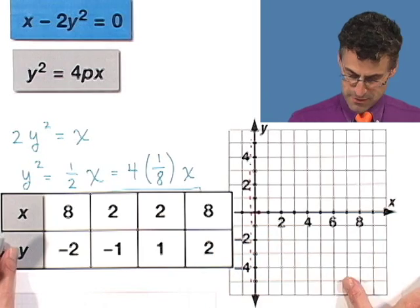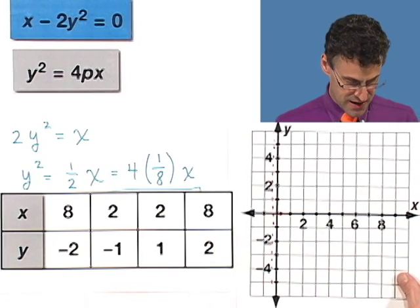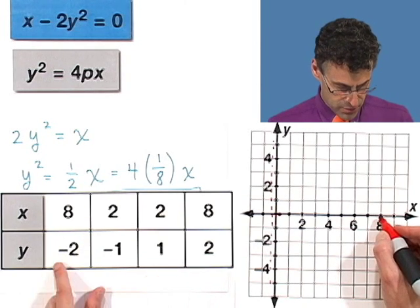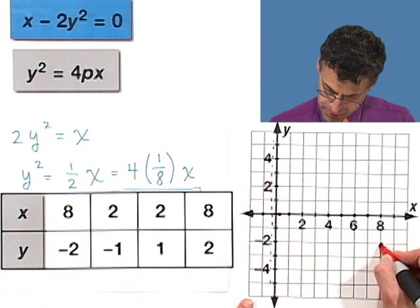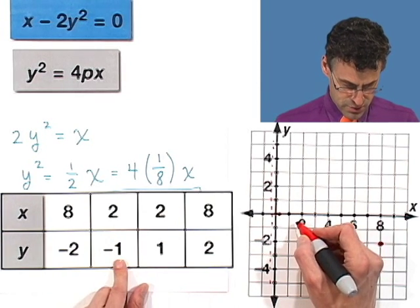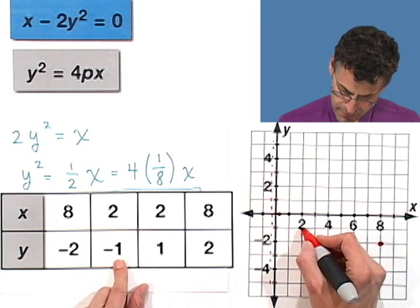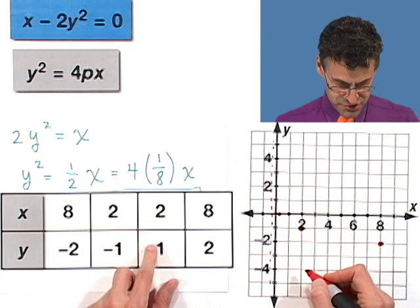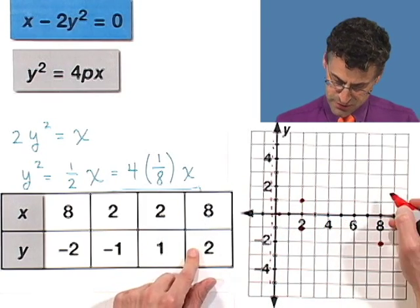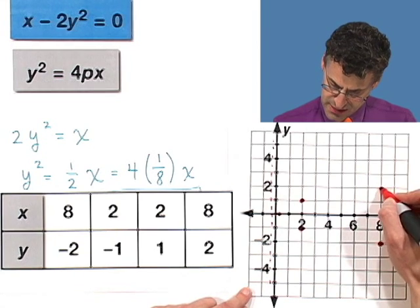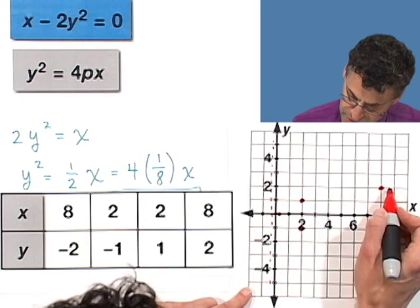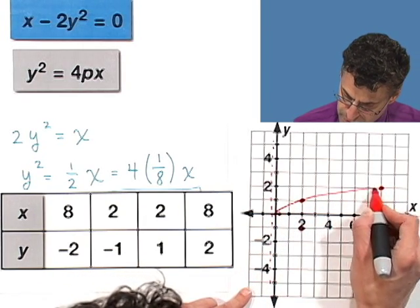To get points, we can just plot some points. Here's the plot of some points. If we plot these points real fast, x equals 8, that's over here. y equals negative 2. I'll put a point right there. If x equals 2, y equals negative 1. And if x equals 2, y also equals 1. And if x equals 8, it also equals 2. And now you start to see, and we know it goes through the origin.